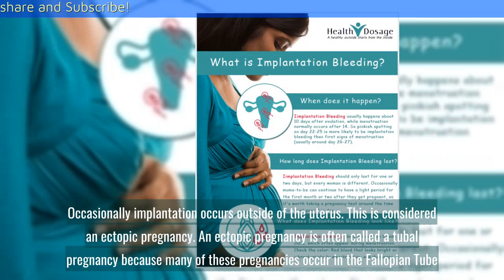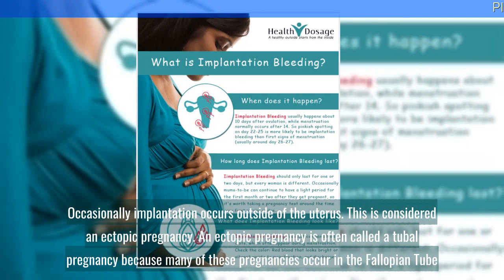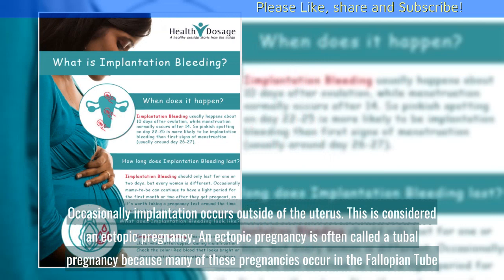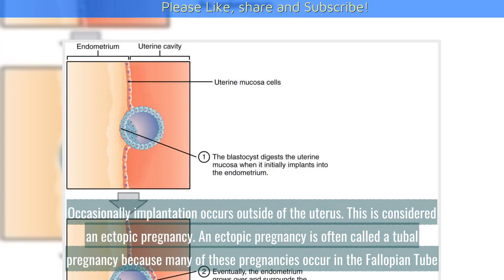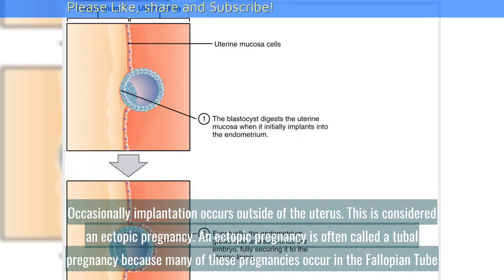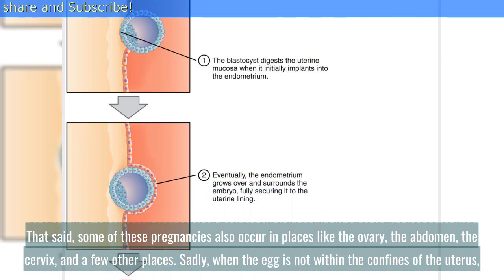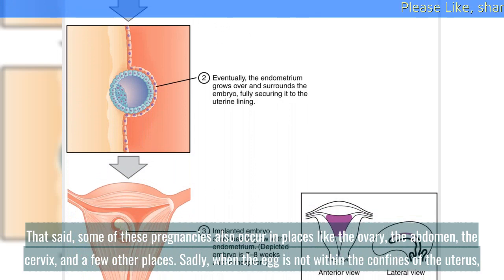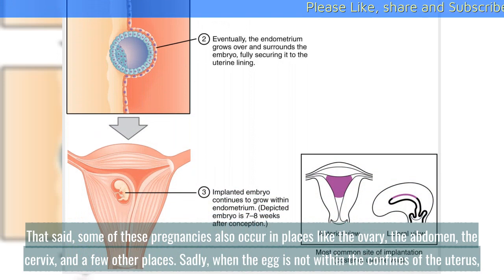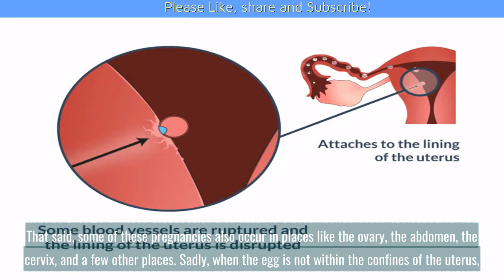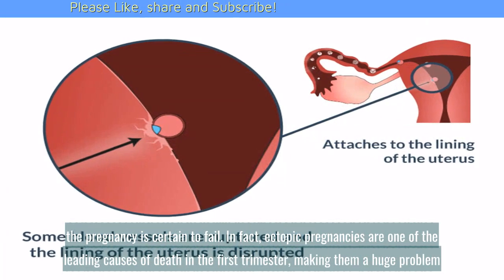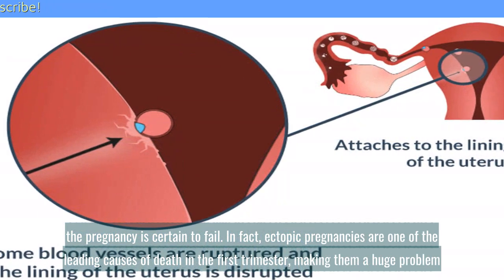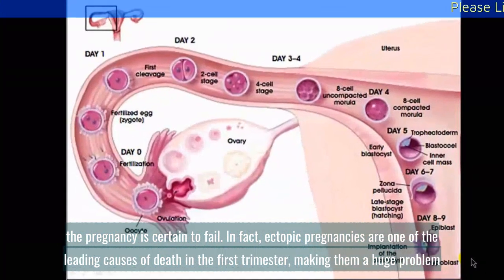Occasionally implantation occurs outside of the uterus. This is considered an ectopic pregnancy. An ectopic pregnancy is often called a tubal pregnancy because many of these pregnancies occur in the fallopian tube. That said, some of these pregnancies also occur in places like the ovary, the abdomen, the cervix, and a few other places. Sadly, when the egg is not within the confines of the uterus, the pregnancy is certain to fail. In fact, ectopic pregnancies are one of the leading causes of death in the first trimester, making them a huge problem.